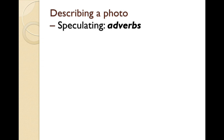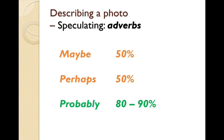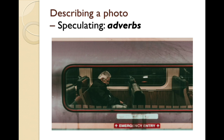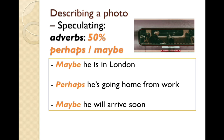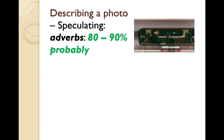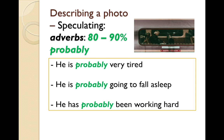We can also speculate using adverbs. 'Maybe' — about 50%. 'Perhaps' — also about 50%. And 'probably' — which is more like 80–90%. Look at this picture: maybe he's in London; perhaps he's going home from work; maybe he will arrive soon; perhaps he's British. He is probably very tired; he's probably going to fall asleep; he has probably been working hard; it's probably evening.